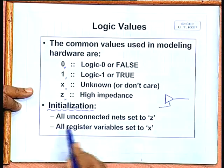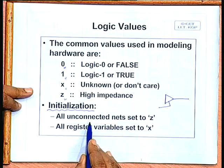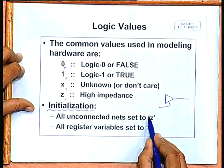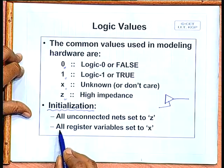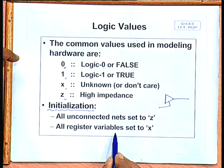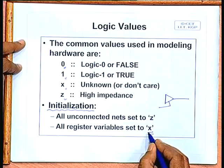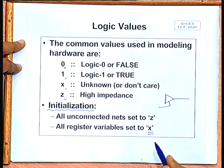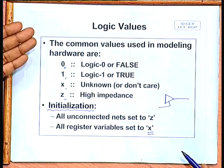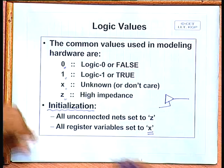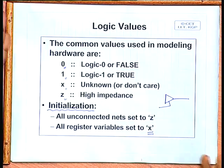For simulation purposes, all nets which are not connected — either physically, meaning no driver, or where the driver is currently in tri-state — will be set to the z state. All register variables by default will be set to the undefined state x at the beginning of simulation. For correct operation of the circuit, it is your responsibility to apply suitable inputs so that register variables are set to known values before you can apply meaningful inputs and get outputs.